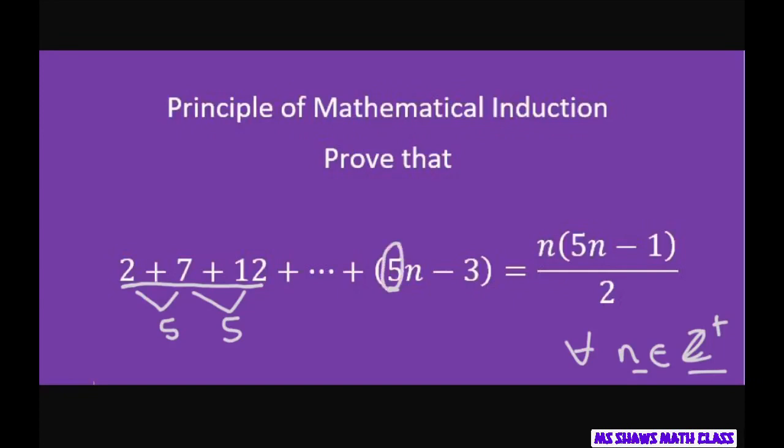And if I start adding a new term, the term after this one would be 5n plus 2 because you keep adding 5. So if I add 5 to the negative 3, I get 2. The next term would be 5n plus 7 because I'm adding 5 to each of these.